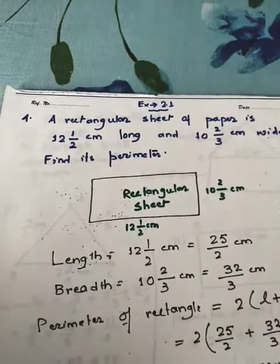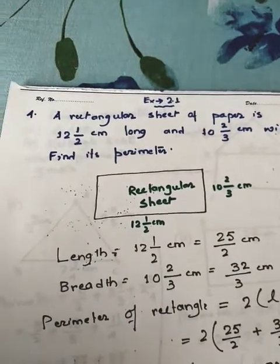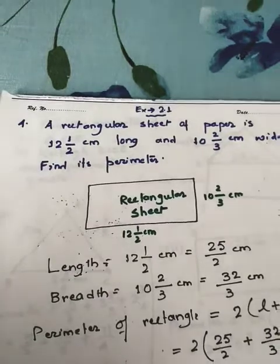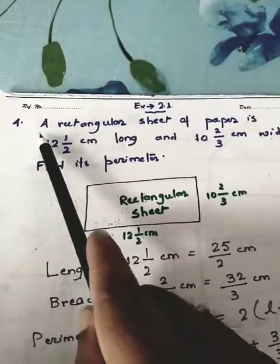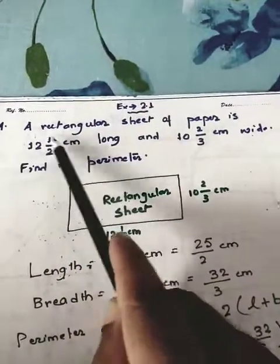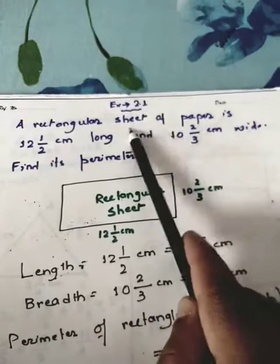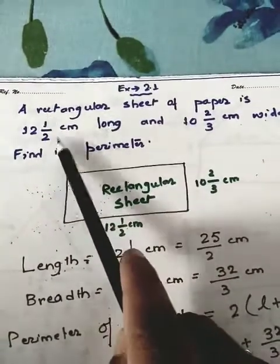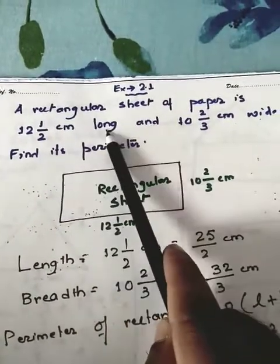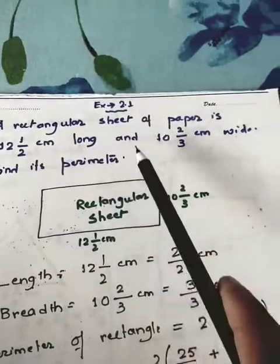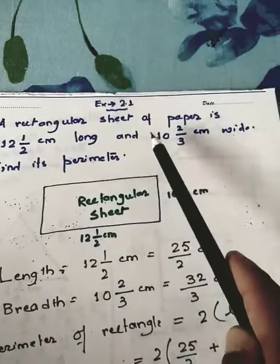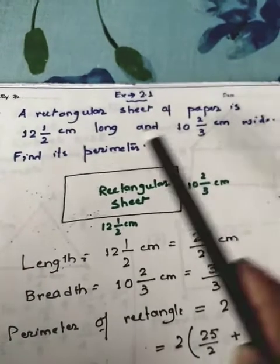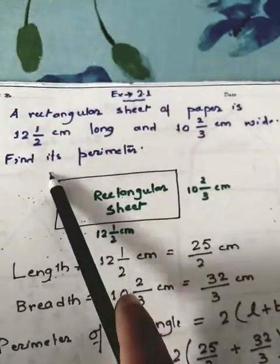Today we'll do question number four and five of exercise 2.1. In question number four, a rectangular sheet of paper is 12 and 1/2 centimeter long — that is the length — and 10 and 2/3 centimeter wide — that is the breadth.